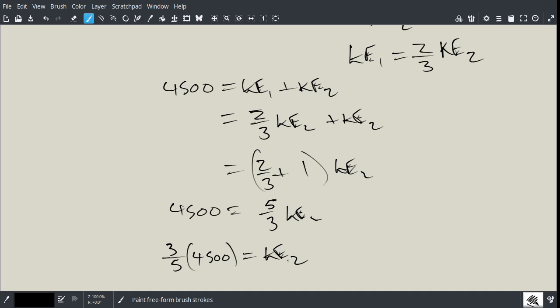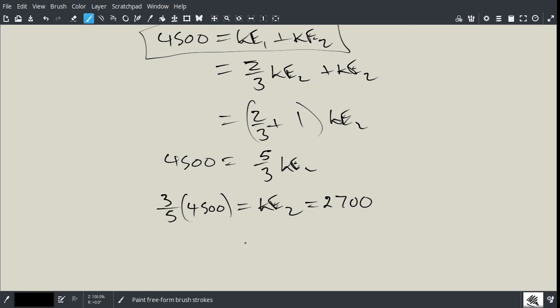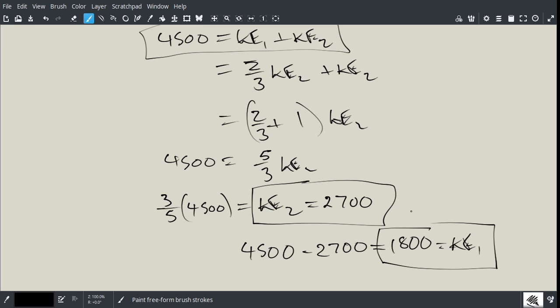And so now, to find the other one, it's really easy, right? Because you know this equation, so you know that 4,500 minus 2,700 has got to equal KE1, and that is 1,800. And that's KE1. So that's the solution for this. Thank you.